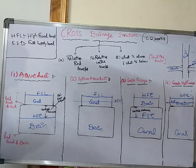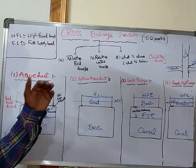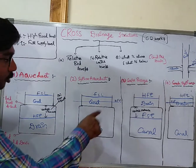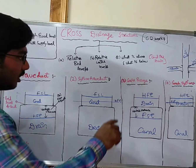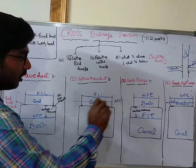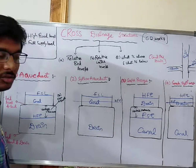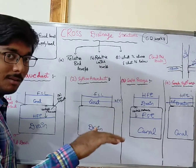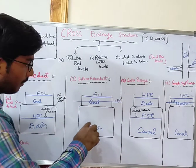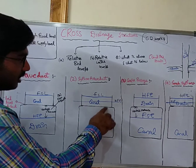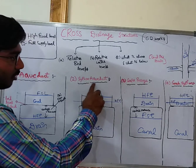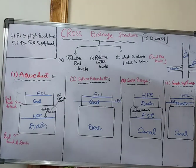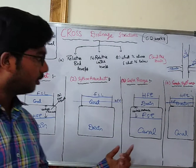In a Siphon Aqueduct, the drain is also flowing below and the canal is flowing above, but there is no vertical clearance between the High Flood Level and the canal bed level. The High Flood Level flows above the bed level of the canal. This absence of freeboard is what distinguishes a Siphon Aqueduct from a regular Aqueduct.